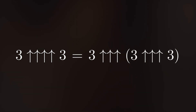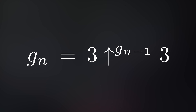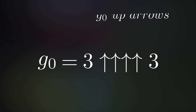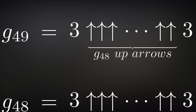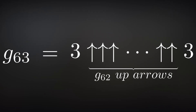So 3 hexated to 3 means 3 pentated to 3 pentated to 3. Graham's number is up arrows taken to the extreme, where g0 is equivalent to 3 hexated to 3 — already an unfathomable number — and gn is equivalent to 3 and 3 with gn-minus-1 arrows in between. Meaning g1 will have 3 hexated to 3 arrows, g2 has g1 up arrows, and so on. Graham's number is g63, and it has some mathematical use as an upper bound for the Graham-Rothschild theorem.